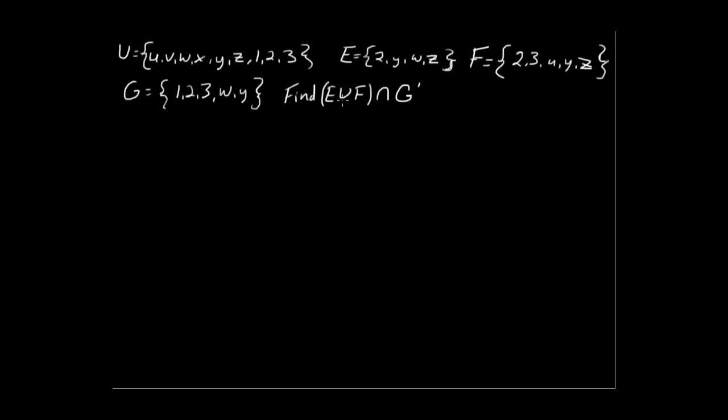We are trying to find E union F intersect G complement. This is a pretty simple problem, but when you get a lot of different sets with a lot of different elements in those sets it can get pretty confusing, especially when you've got something like this where you've got an E union F intersecting the complement of another set. And these problems are easy as long as you understand the language used in these problems and what all these symbols represent.